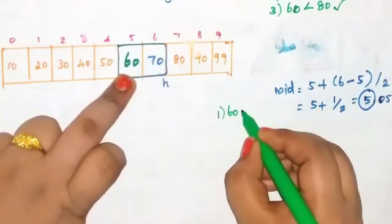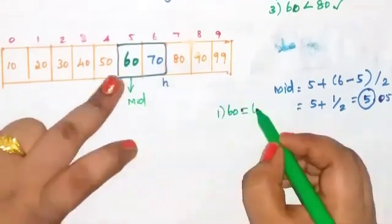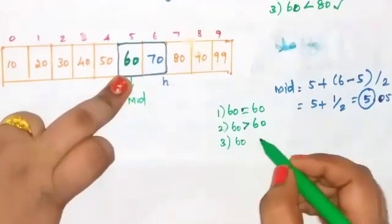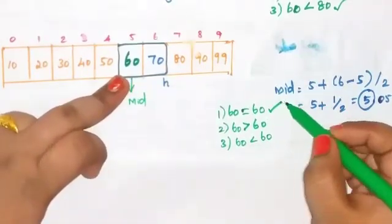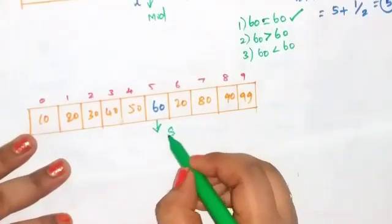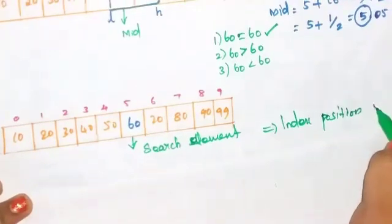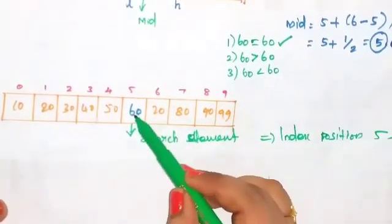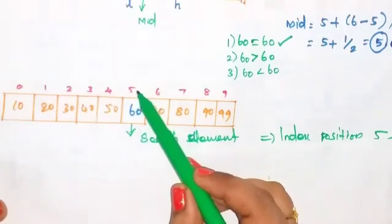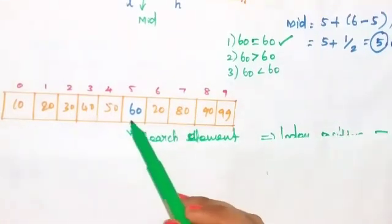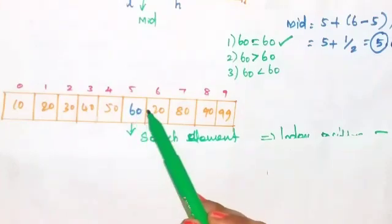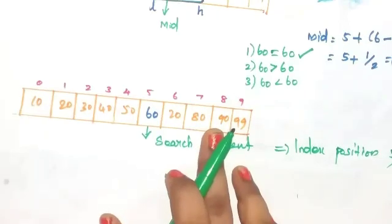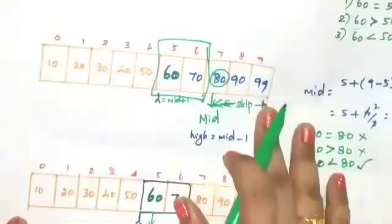Check conditions: search element 60 equals middle element 60? Yes — this is true! We found the search element. Its index position is 5. The search element 60 is found at location 5 — a successful result. However, if you search for 95, it is not available in the list, and the binary search algorithm returns an unsuccessful result.